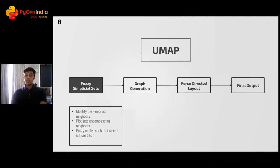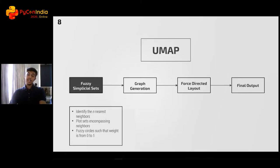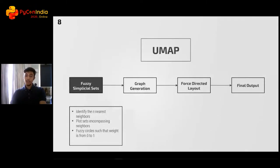This is where our first parameter plays its part: the n_neighbors. After constructing a set, we create something called a simplicial set, which in a very broad manner means we create an edge between two points. We can meaningfully measure the distance between two points and assign weights to these edges depending on how far apart the points are. That is exactly what the fuzzy property means.